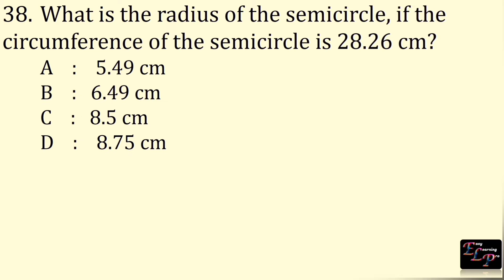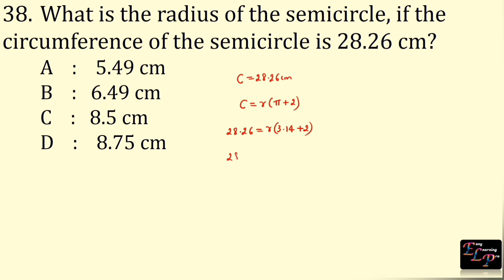What is the radius of the semicircle if the circumference of the semicircle is 28.26 cm? Circumference is 28.26 cm. Circumference of a semicircle is r(π + 2): 28.26 = r × (3.14 + 2) = r × 5.14. So r = 28.26 ÷ 5.14 = 5.49 cm.